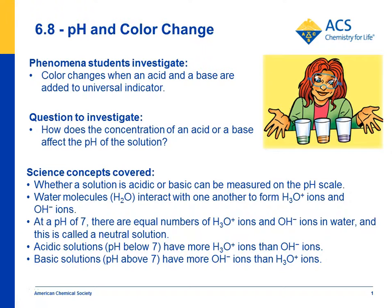In lesson 6.8, students investigate the color changes that happen when an acid or a base are added to universal indicator. The question they investigate is: how does the concentration of an acid or a base affect the pH of a solution?